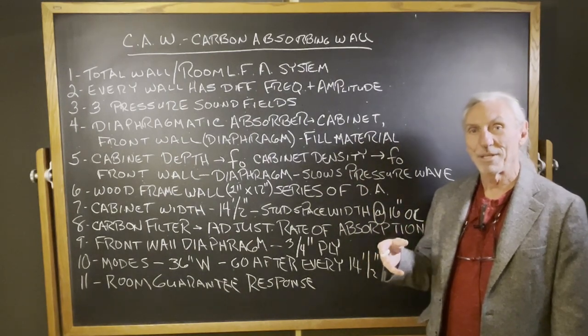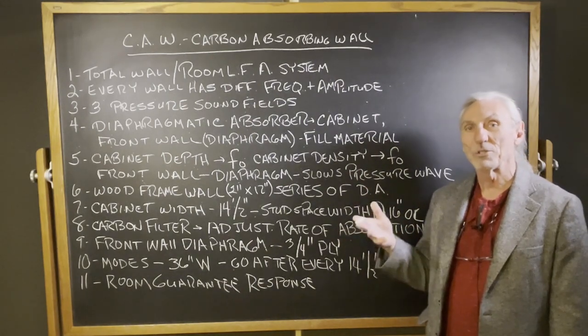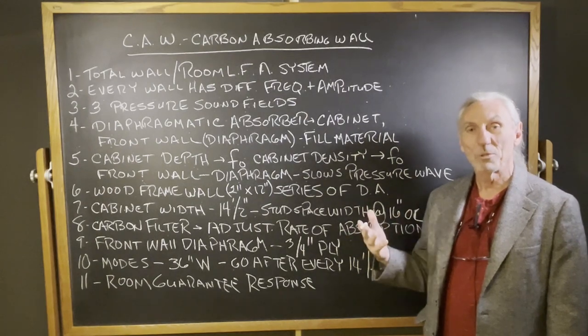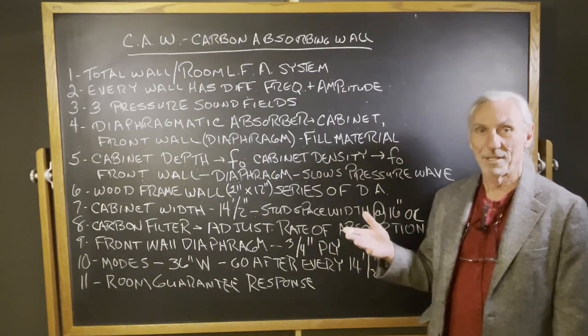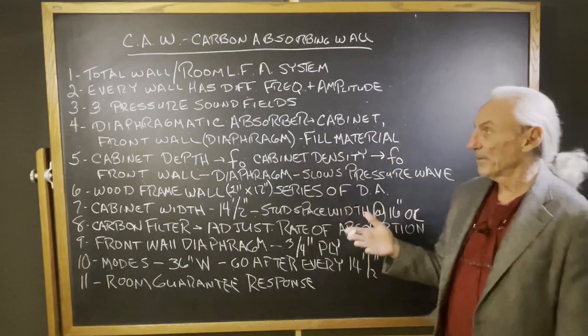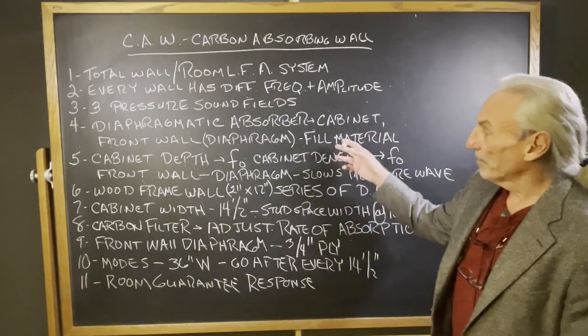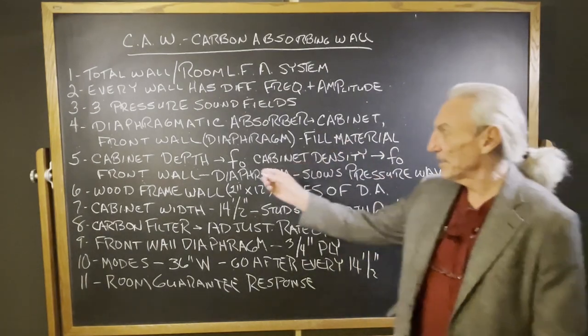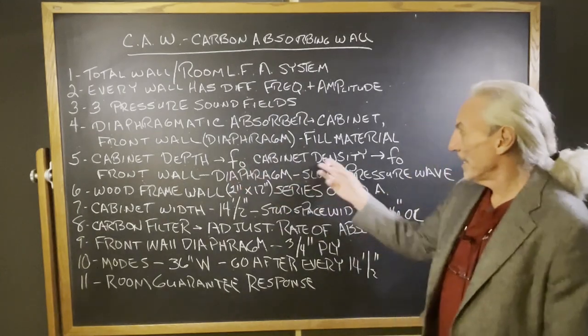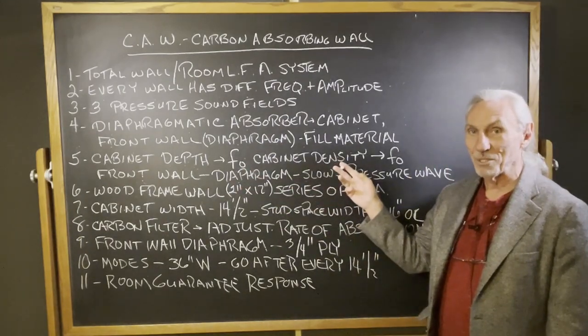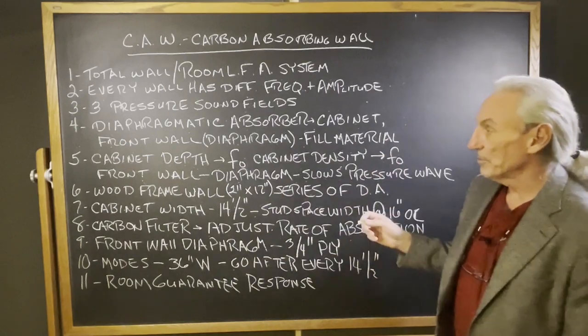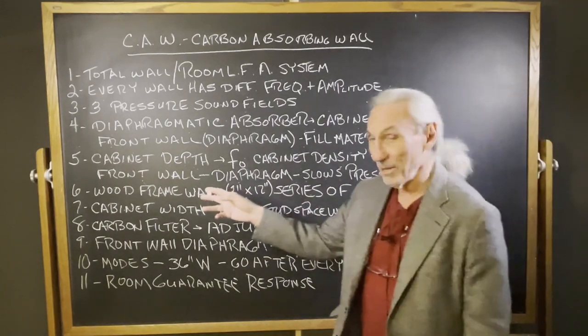So the wave, the pressure wave that enters the cabinet, is now in a different pressure area than what it was created in, so it collapses. That's how we get attenuation. If we have a cabinet depth, we can determine resident frequency. The density of the cabinet, how much it weighs, will also contribute to resident frequency, how low it goes.